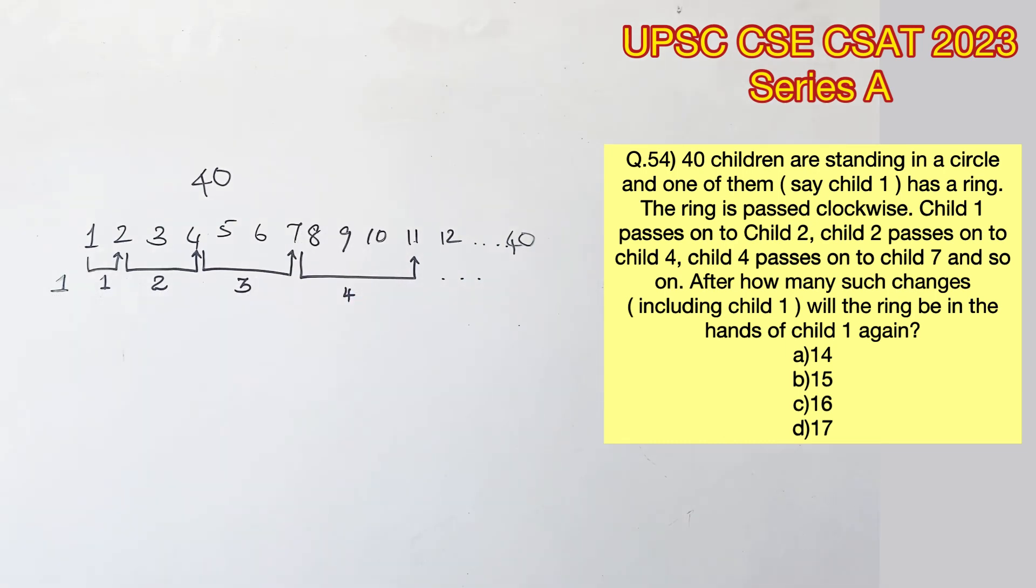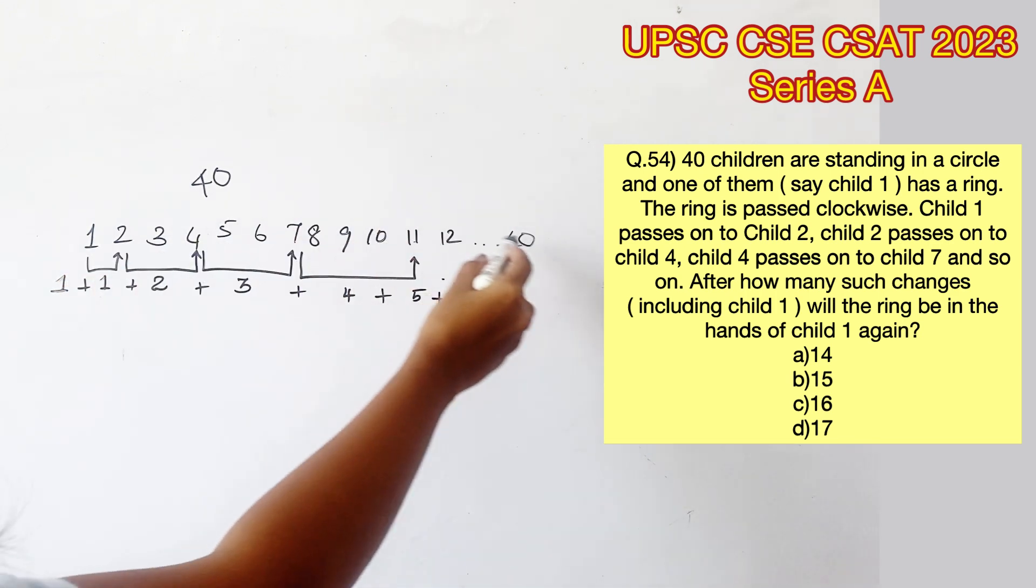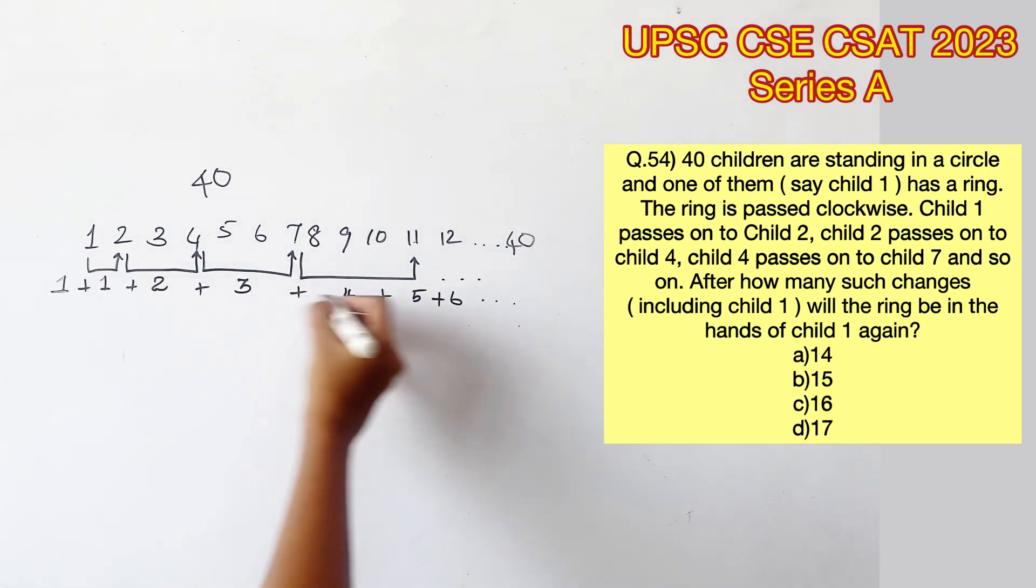Now we are supposed to find after how many changes the ring will again be in the hands of child 1. Which means adding all these values up, we have to get 41 because 40 would be the last child, and since they are standing in a circle, the next would be the first child again.